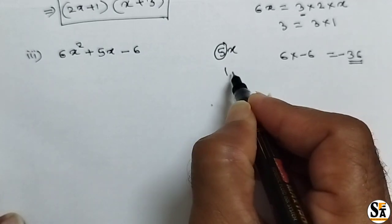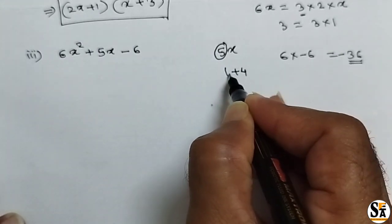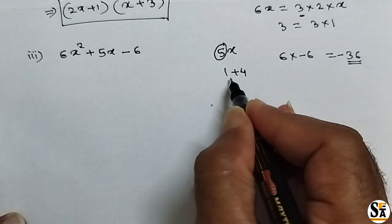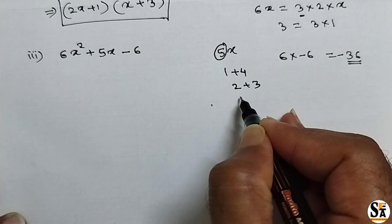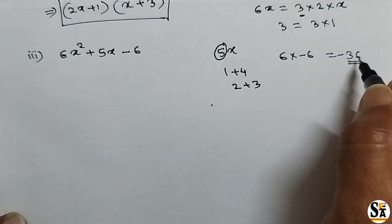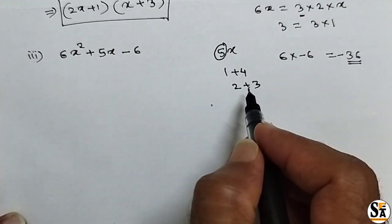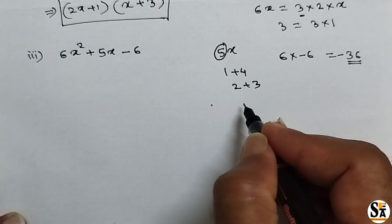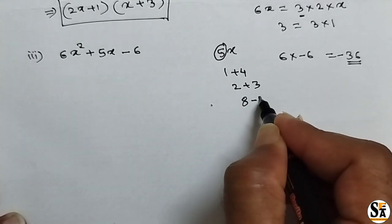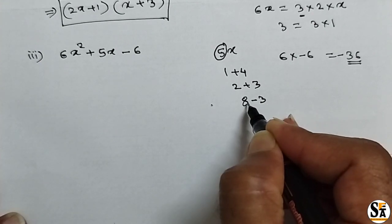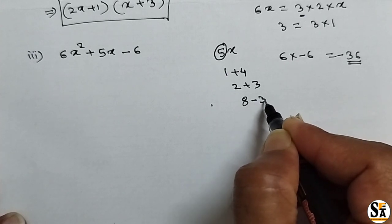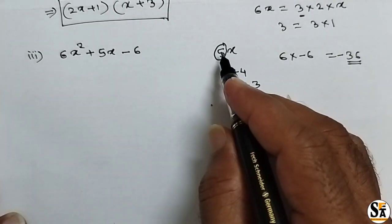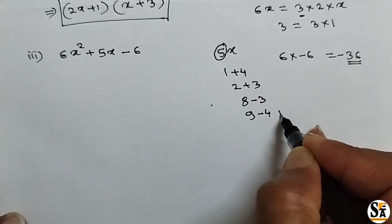5 can be written as 1 plus 4, but multiplication 1 into 4 is 4, not minus 36. Also 2 plus 3 gives multiplication 6, not minus 36. If we try 8 minus 3, multiplication is minus 24, still not minus 36. But if we take 9 minus 4, addition is plus 5 and multiplication is 9 into minus 4 which is minus 36. So these two factors satisfy both conditions.